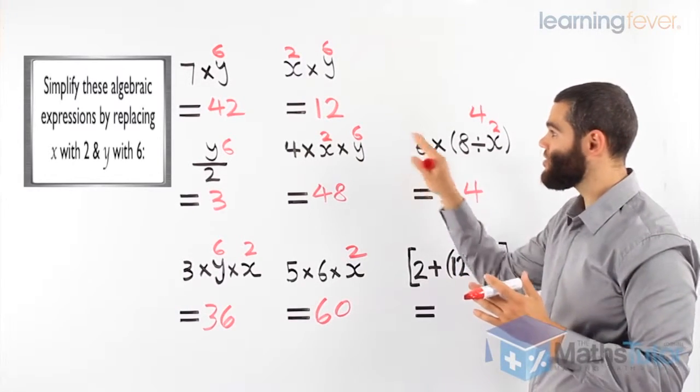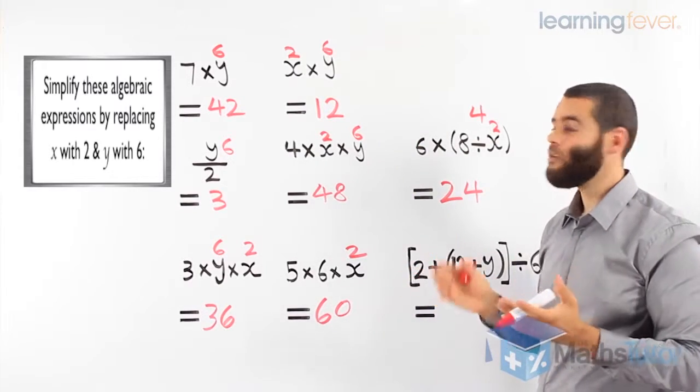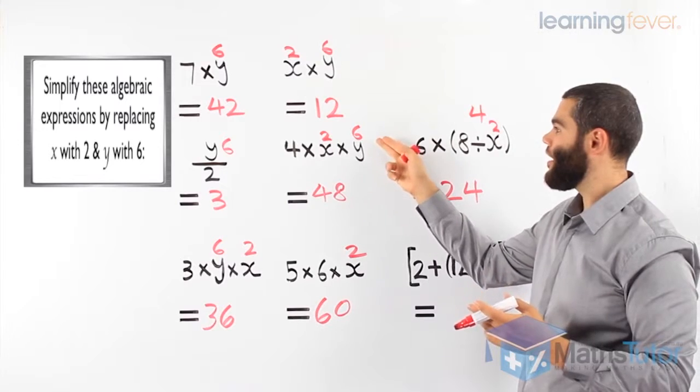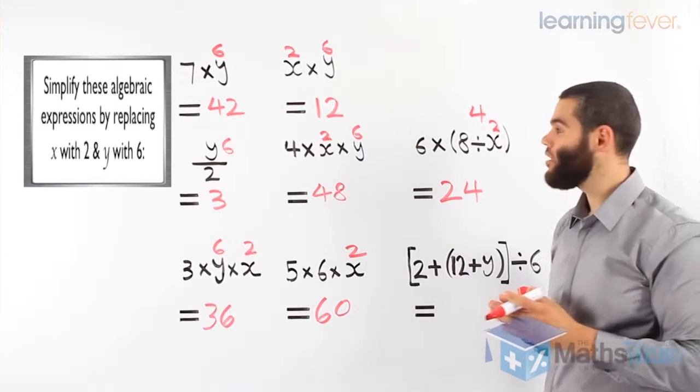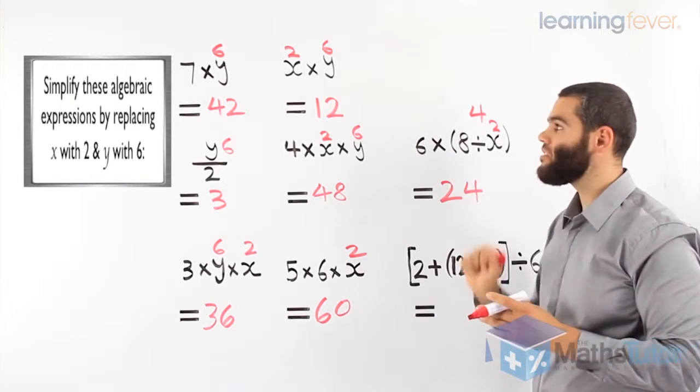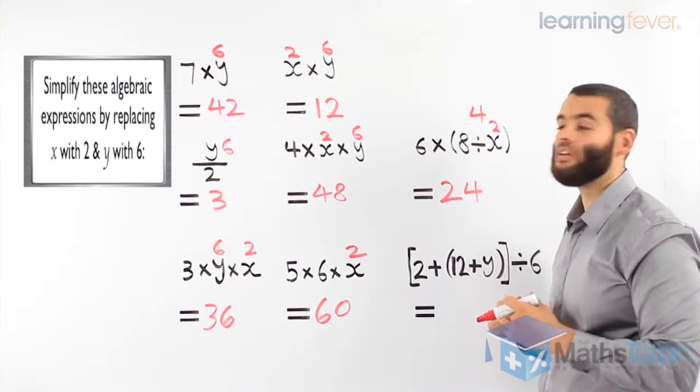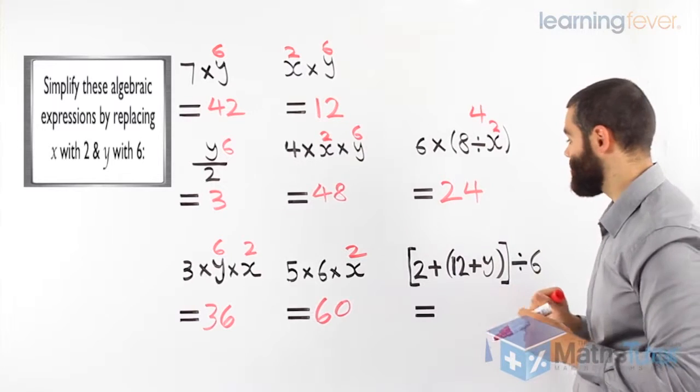If you understand how to substitute, which is basically replace. Wherever you see an x, you put a 2 in this case, and you put a y, and you put a 6 instead of the y, when you see that, because the question is saying to us, whenever you see a y, it's a 6, and whenever you see an x, it is a 2 in our examples here.